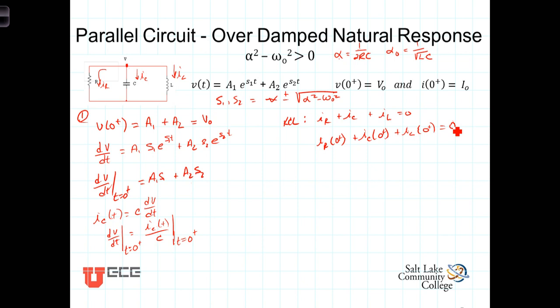The i_C(0⁺) is what we're attempting to find to evaluate the derivative. The current through the resistor is i_R = V_R/R. Since the components are in parallel, the voltage is the same for all three, so i_R(0⁺) = V(0⁺)/R = V₀/R, our initial condition which we can determine from the circuit.